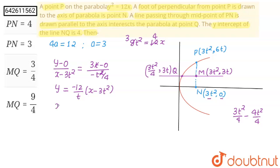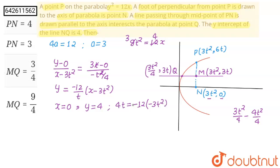When we put x equals 0 we get the y-intercept, which means x equals 0 and y equals 4 satisfies this equation. Substituting: 4 equals minus 12 upon t times (0 minus 3t squared), so 4t equals minus 12 times minus 3t squared. This gives 4t equals 36t squared, and cancelling t we get t equals 4 upon 36, which is 1 upon 9.